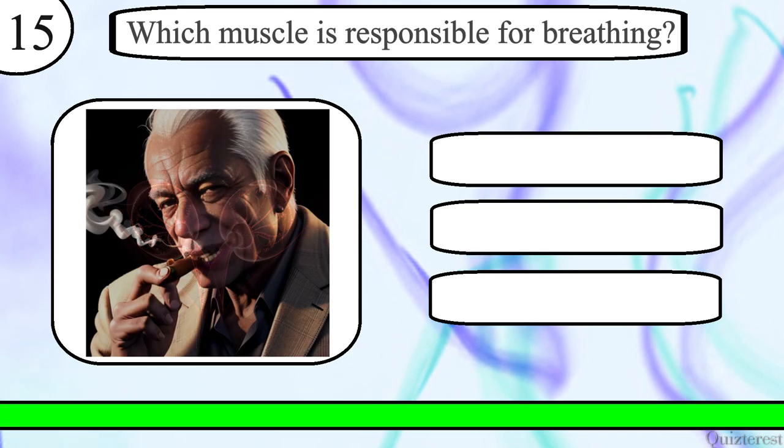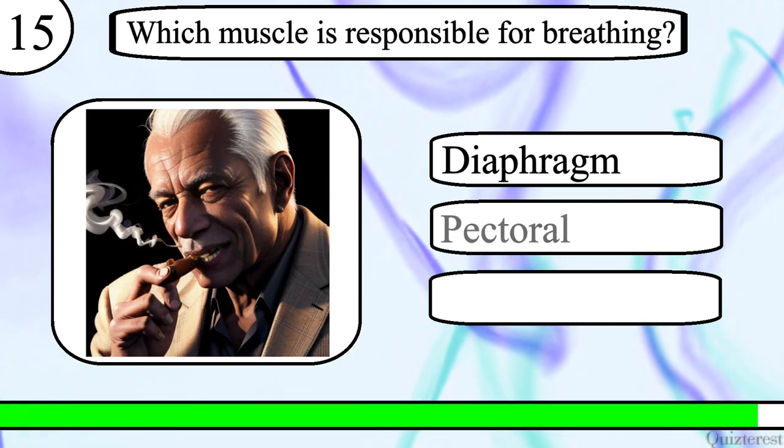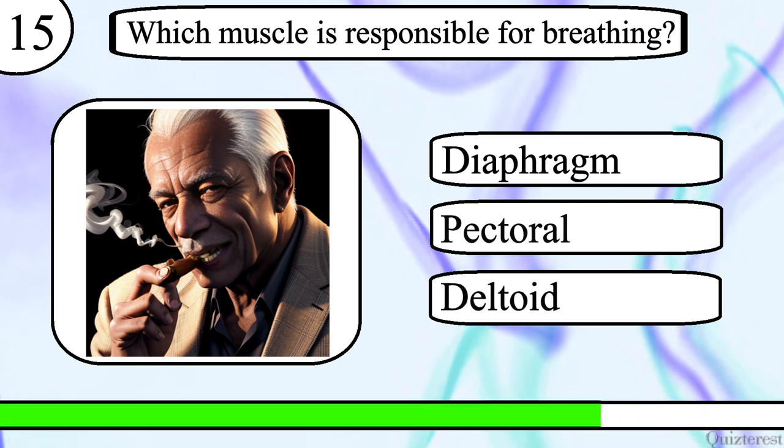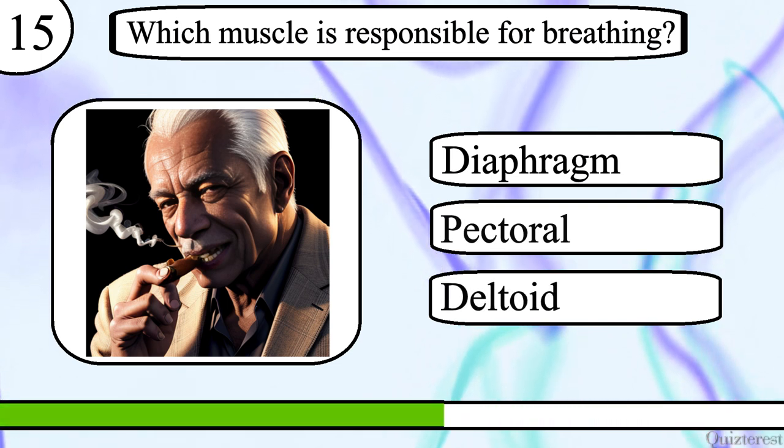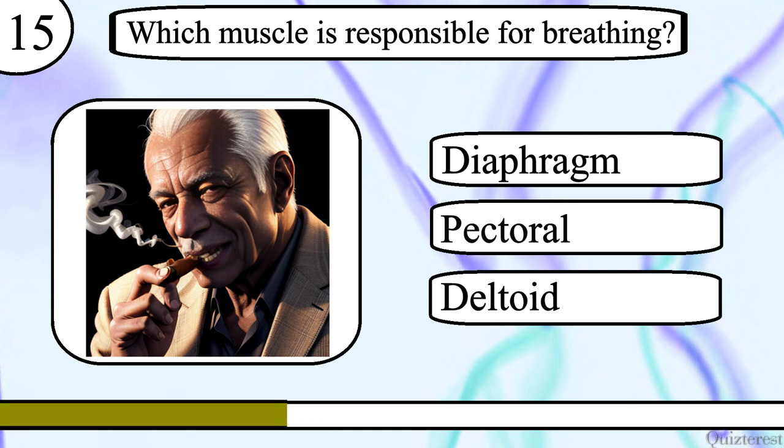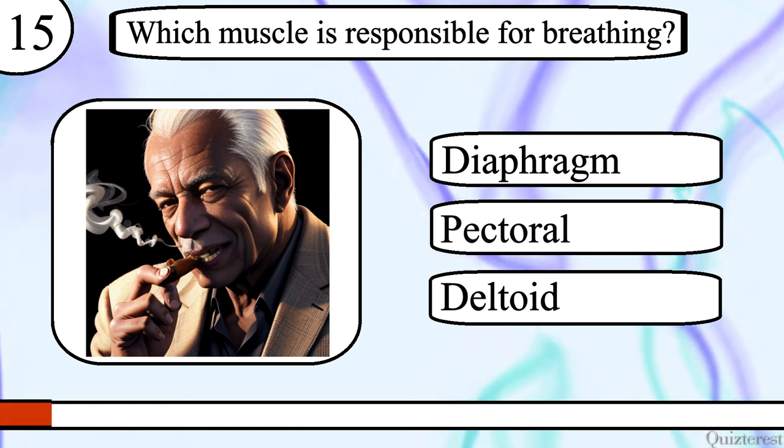Question 15. Which muscle is responsible for breathing? Diaphragm, pectoral or deltoid? The correct answer is diaphragm.